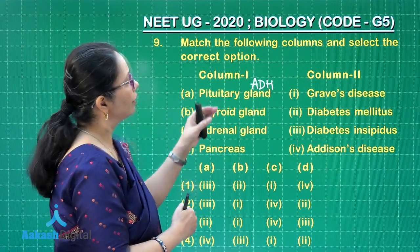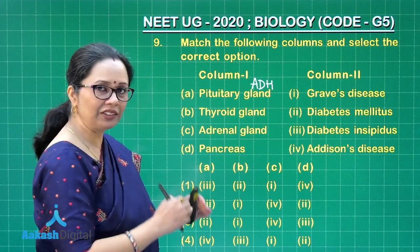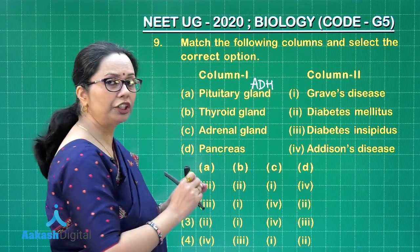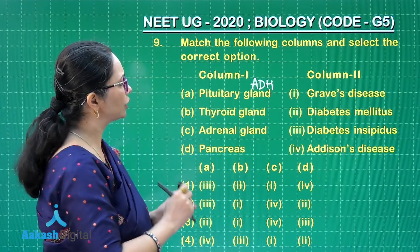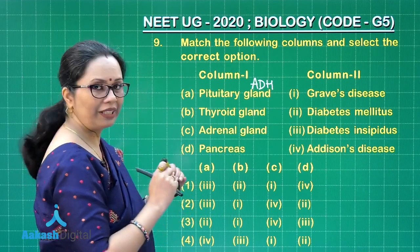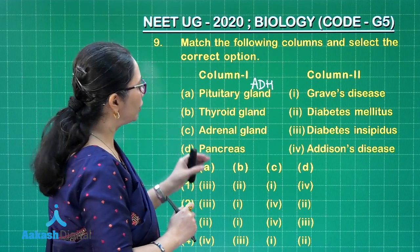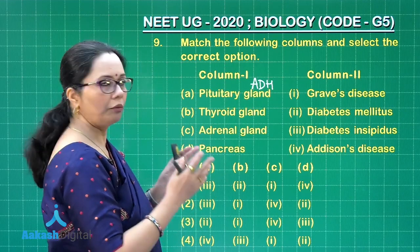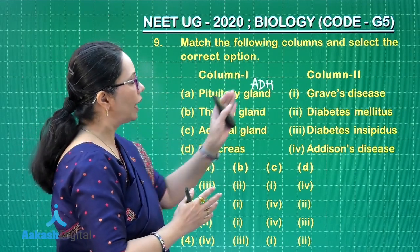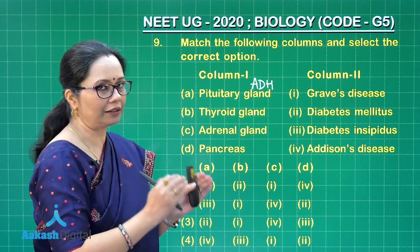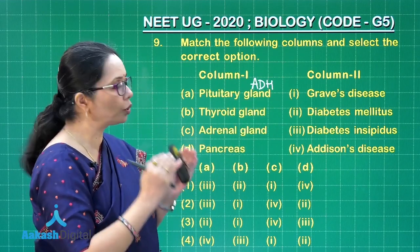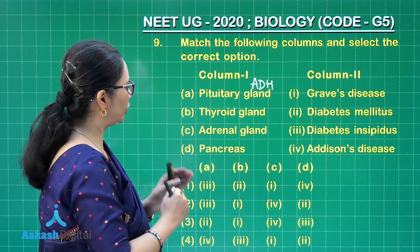Adrenal gland can be related to Addison's disease, which is a condition where both aldosterone and cortisol are secreted in low amounts. And pancreas — the most common disorder — that is diabetes mellitus, where excess glucose passes out in the urine.